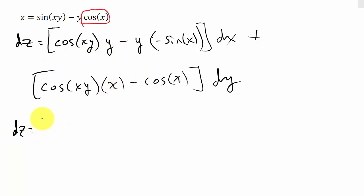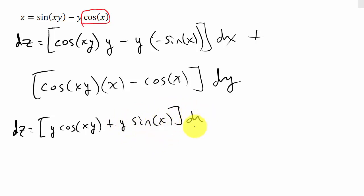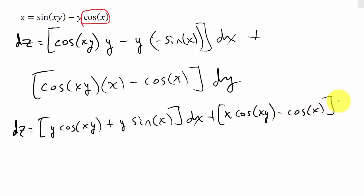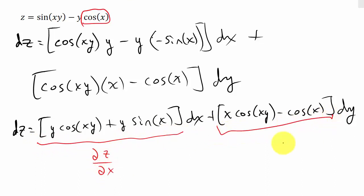I'll rewrite it with the variables in front: that would be y cosine xy plus y sine x, times dx, plus x cosine xy minus cosine x, and then all of that times dy. So that's your total differential — this part is the partial of z with respect to x, and this is the partial of z with respect to y.